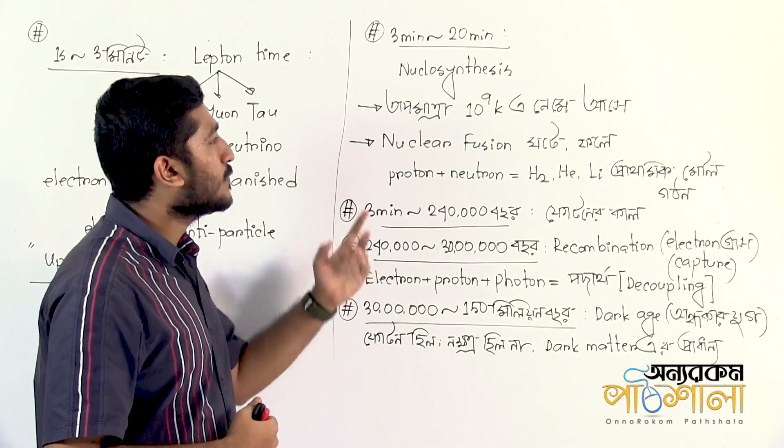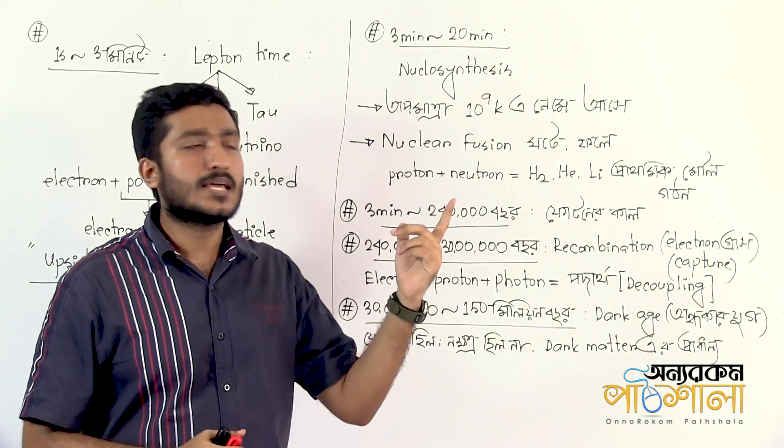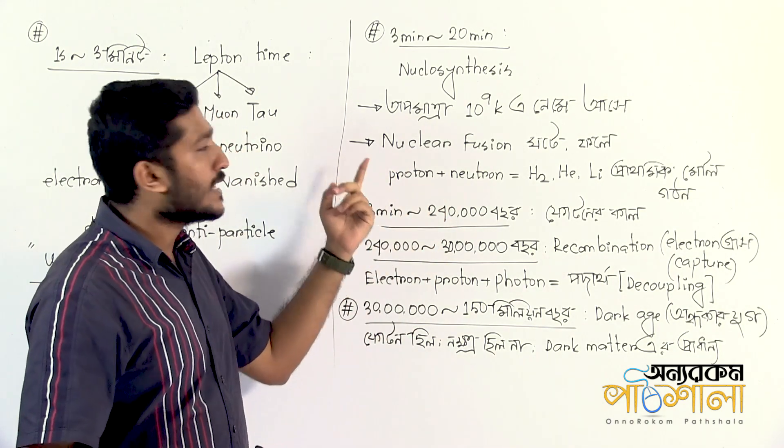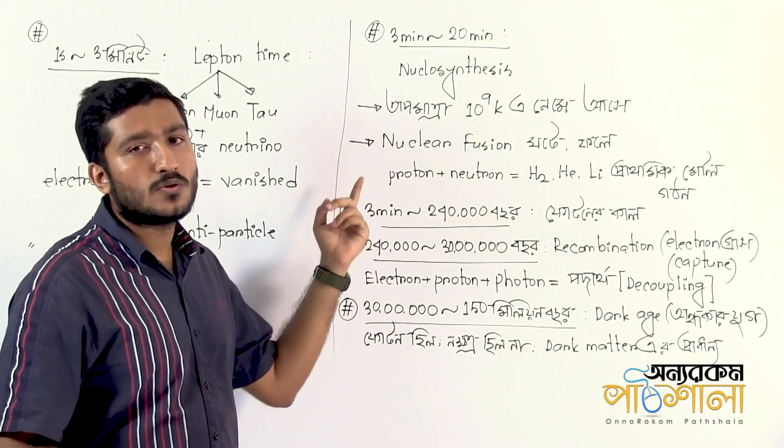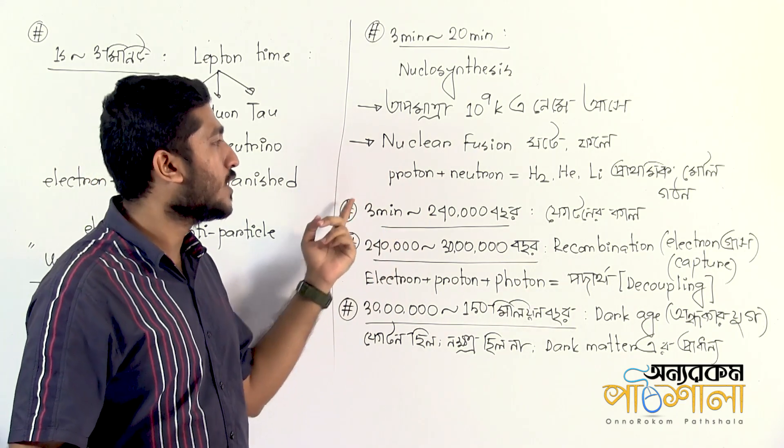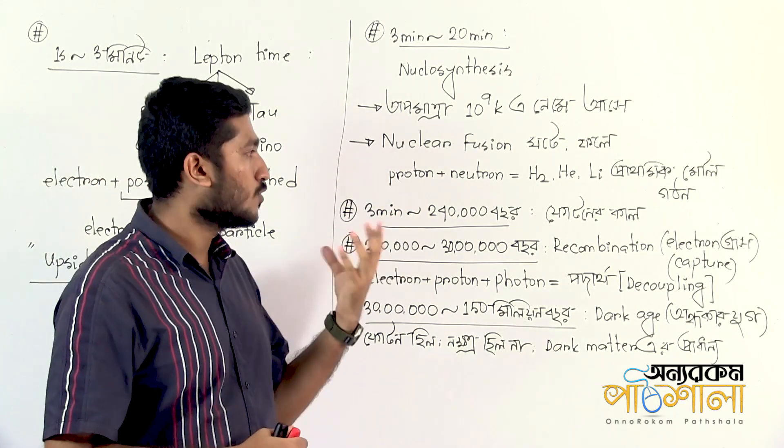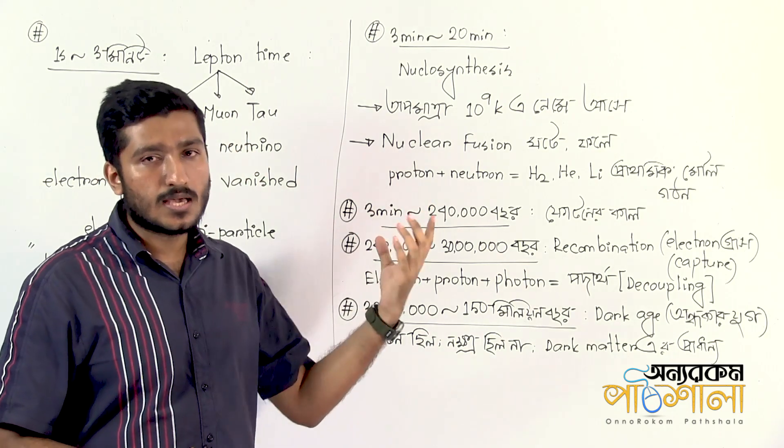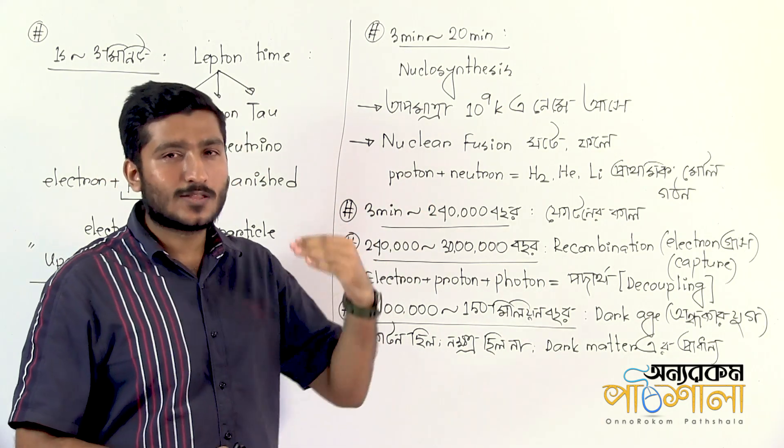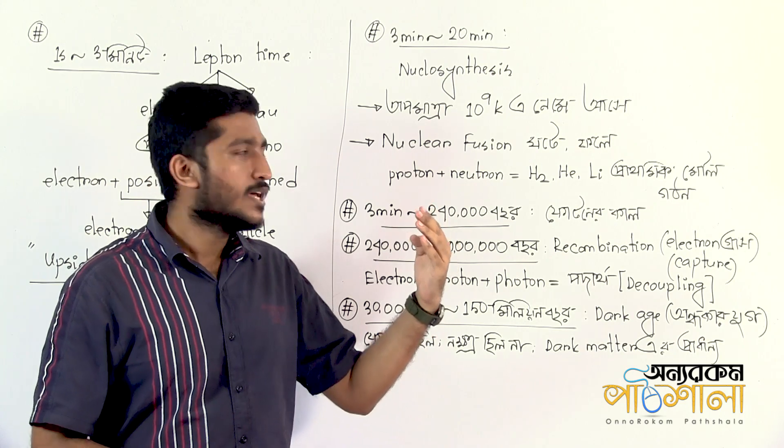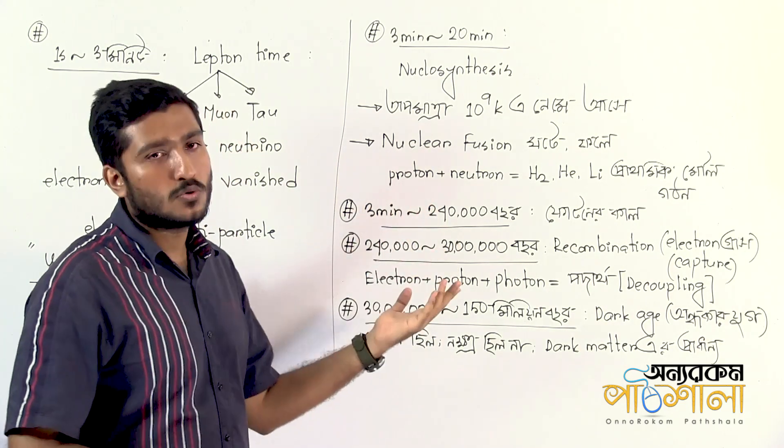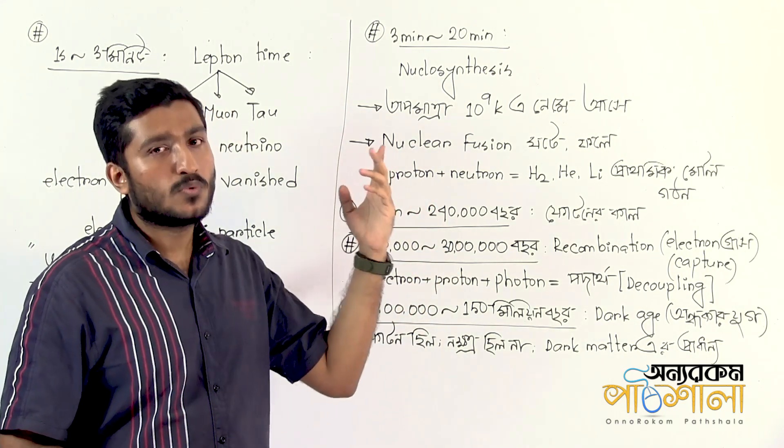The temperature drops to about 10^9 Kelvin. Nuclear fusion begins, allowing the first light elements to form. Hydrogen nuclei fuse to create helium, and trace amounts of lithium and other light elements are synthesized. This primordial nucleosynthesis occurs over approximately 20 minutes.